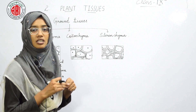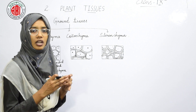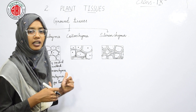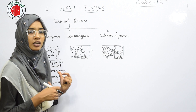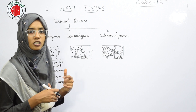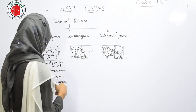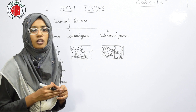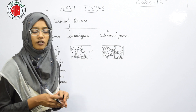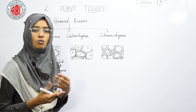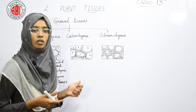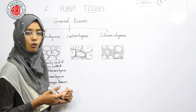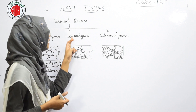The next type is aerenchyma. Parenchymatous cells or tissues that show air spaces for the exchange of gases are termed aerenchyma. The last type is storage tissues — as the name indicates, food material can be stored in the parenchymatous cells that are known as storage tissues.